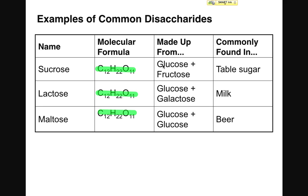Sucrose, as a disaccharide, is composed of glucose and fructose. Lactose is composed of glucose and galactose. Maltose is simply two glucose molecules linked together. Sucrose is found in table sugar — the white crystalline solid you add to brownies, cakes, pies, and cookies. Lactose is the sugar that makes milk slightly sweet. And maltose is the sugar fermented by yeast in the production of beer.